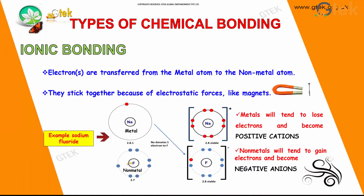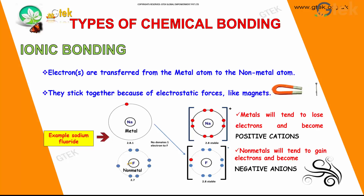In summary, electrons are transferred from the metal atom to a non-metal atom. They stick together because of electrostatic forces, like a magnet. Metals tend to lose electrons and become positive cations, while non-metals tend to gain electrons and become negative anions.